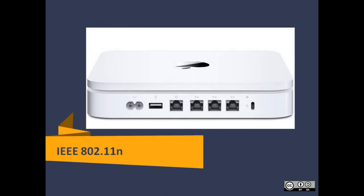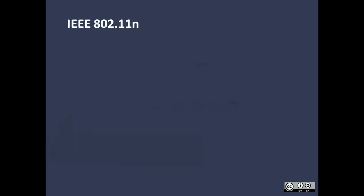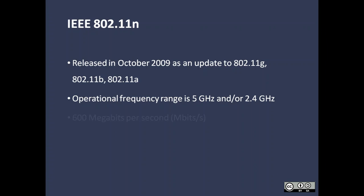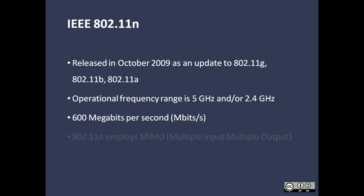Let's move to 802.11 N. 802.11 N came as an update to 802.11 G, 802.11 B, and 802.11 A. It can operate on both 5 GHz and 2.4 GHz frequency ranges. It has a speed of 600 Mbps and employs the MIMO concept, which stands for Multiple Input and Multiple Output. 802.11 N has a maximum theoretical throughput of 600 Mbps, a significant increase over previous standards, using multiple streams to achieve this high throughput.